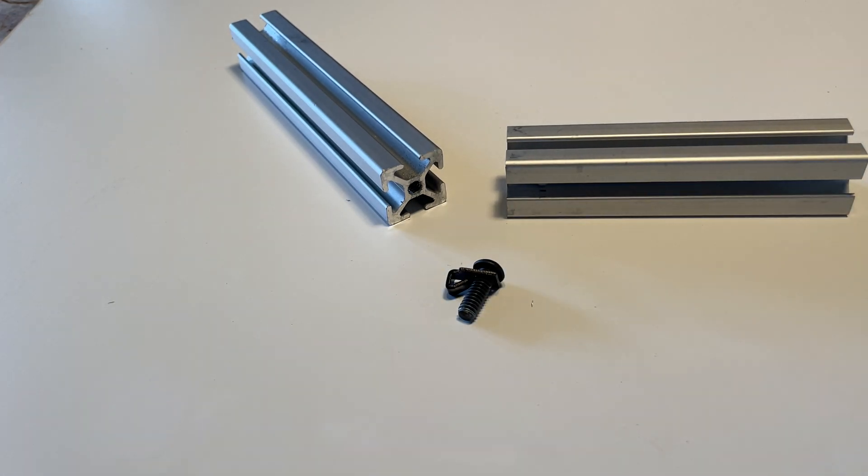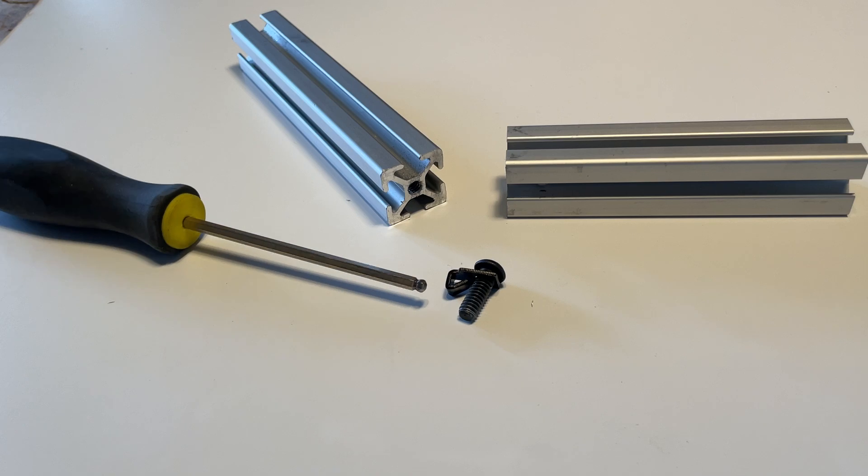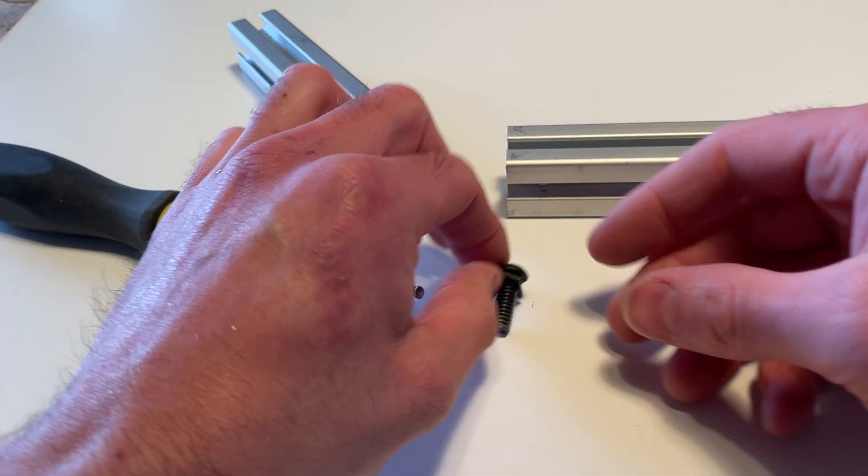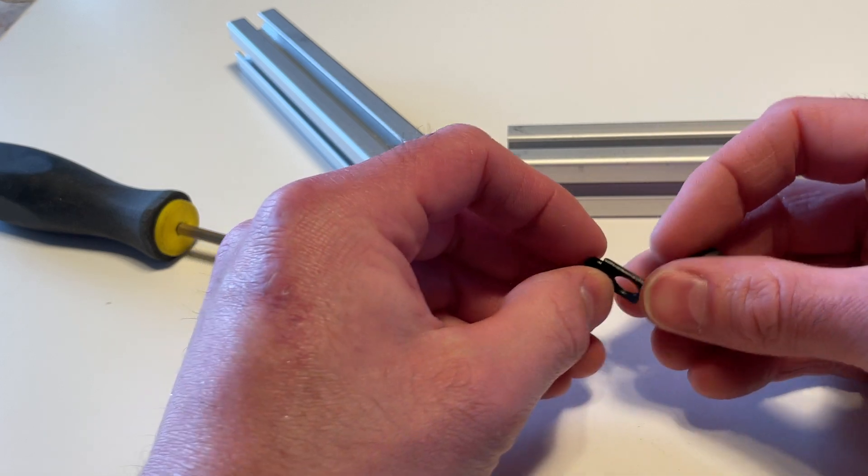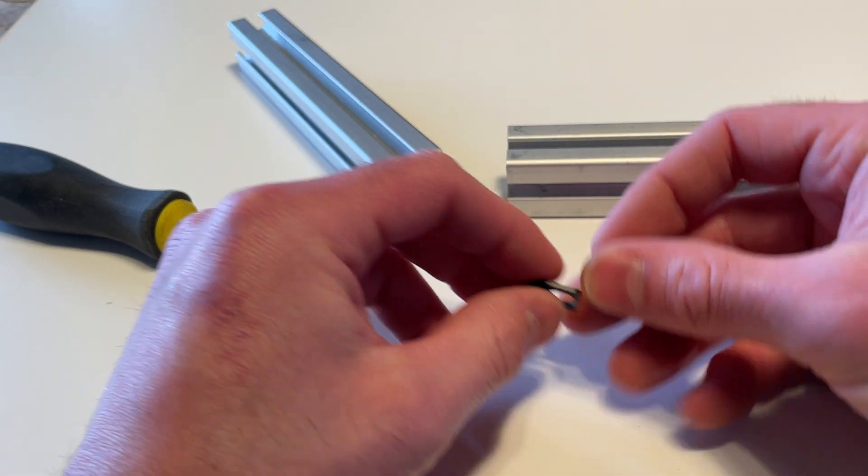This video is on how to install end fasteners. This is an end fastener. It consists of a three-quarter inch screw and a collar with a tab on it.